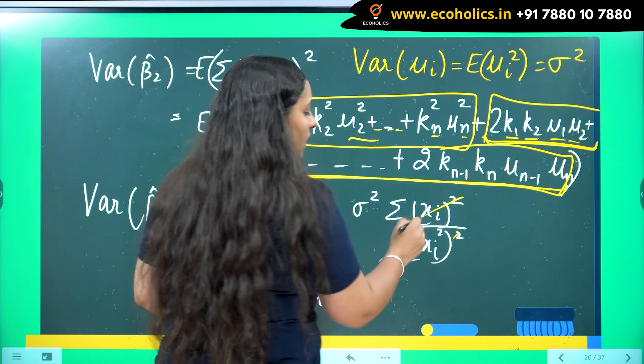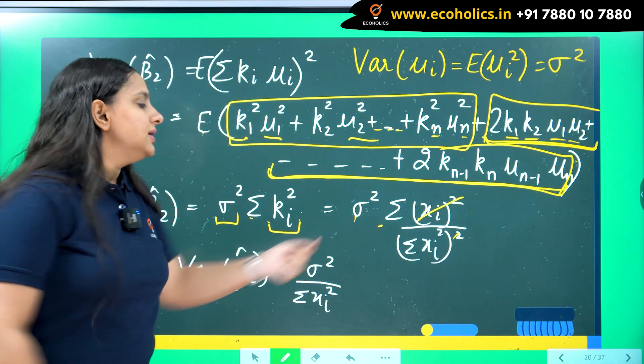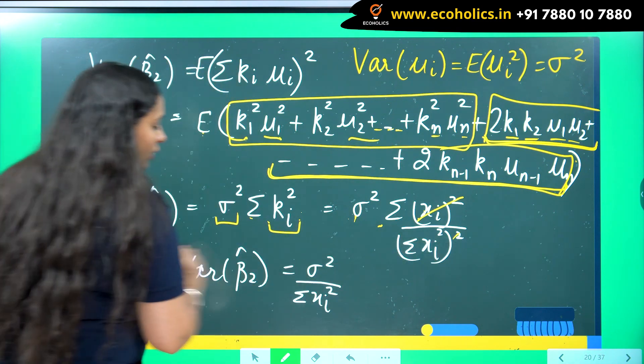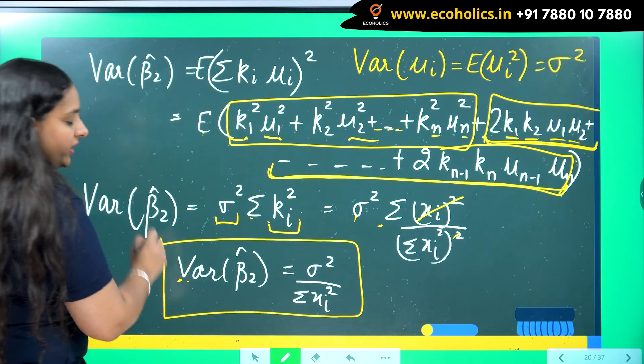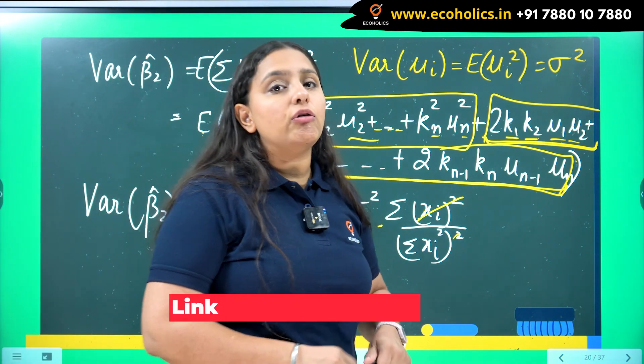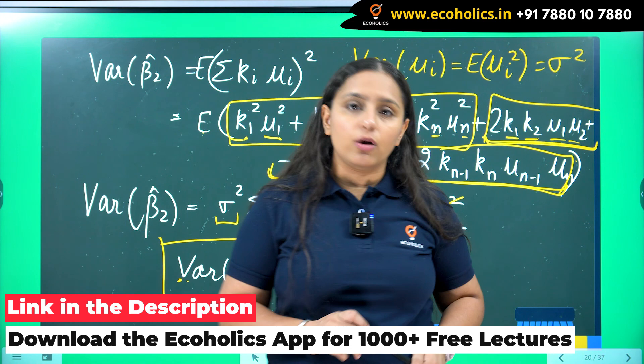Cancelling the terms out I would be left with sigma square upon summation x i square, which is equal to the variance of beta 2 hat. So this is how we find the value of variance of our slope coefficient.